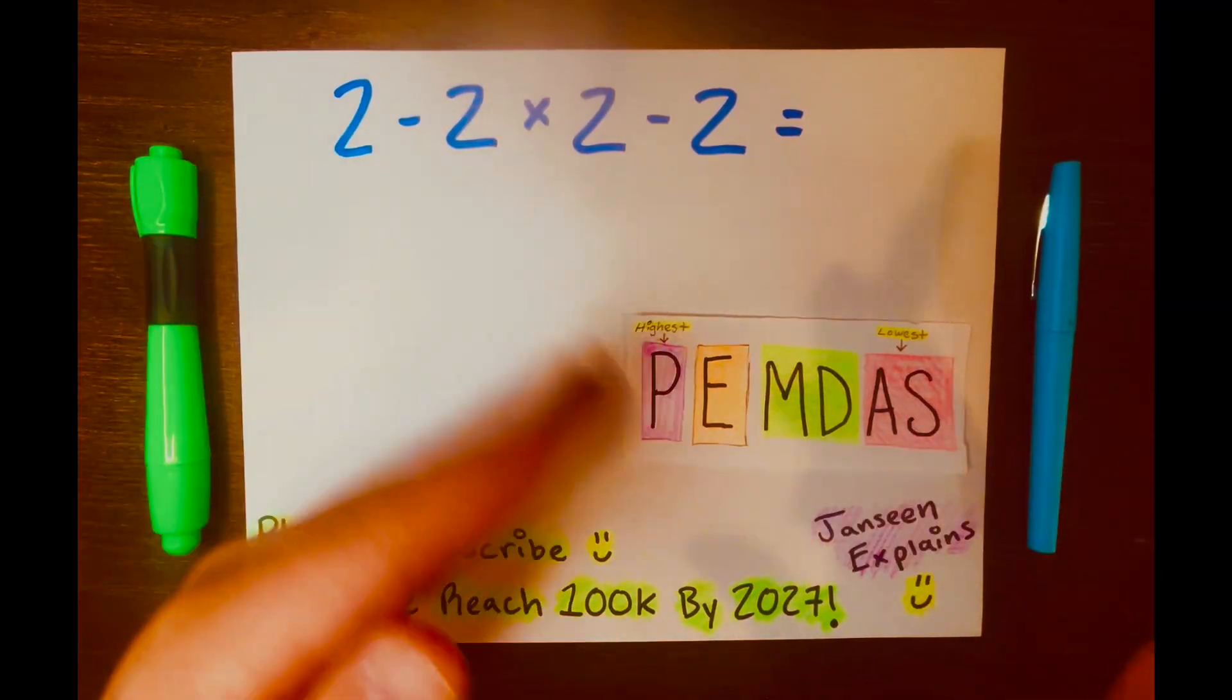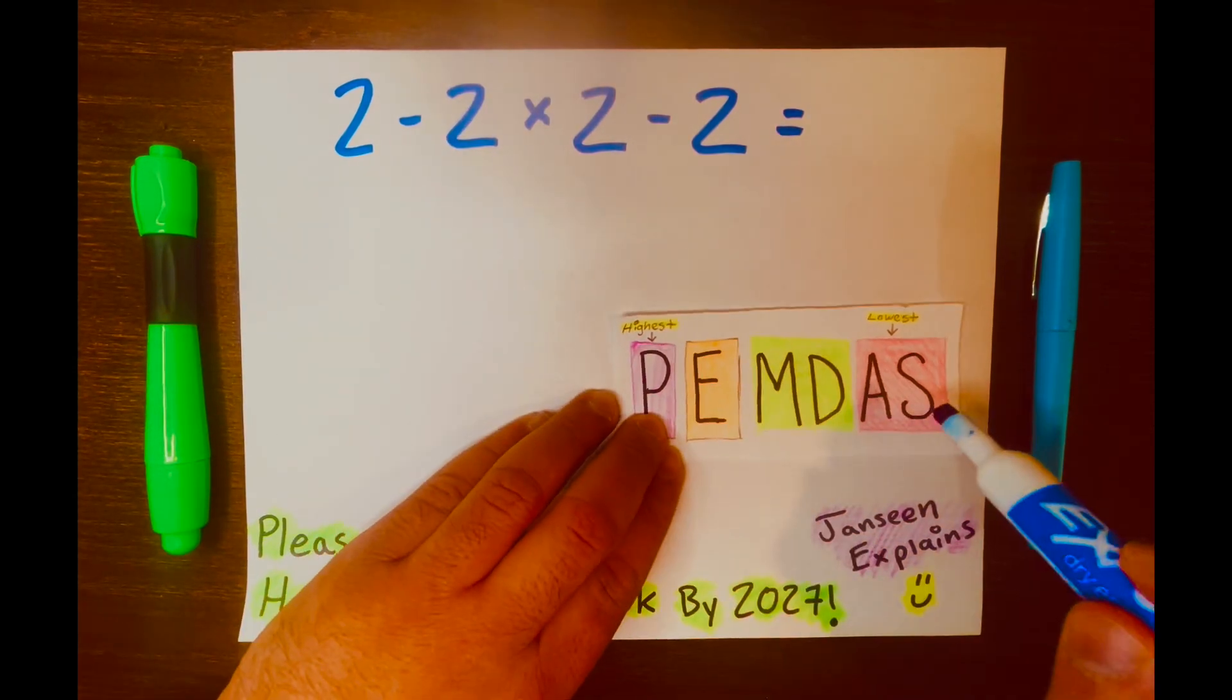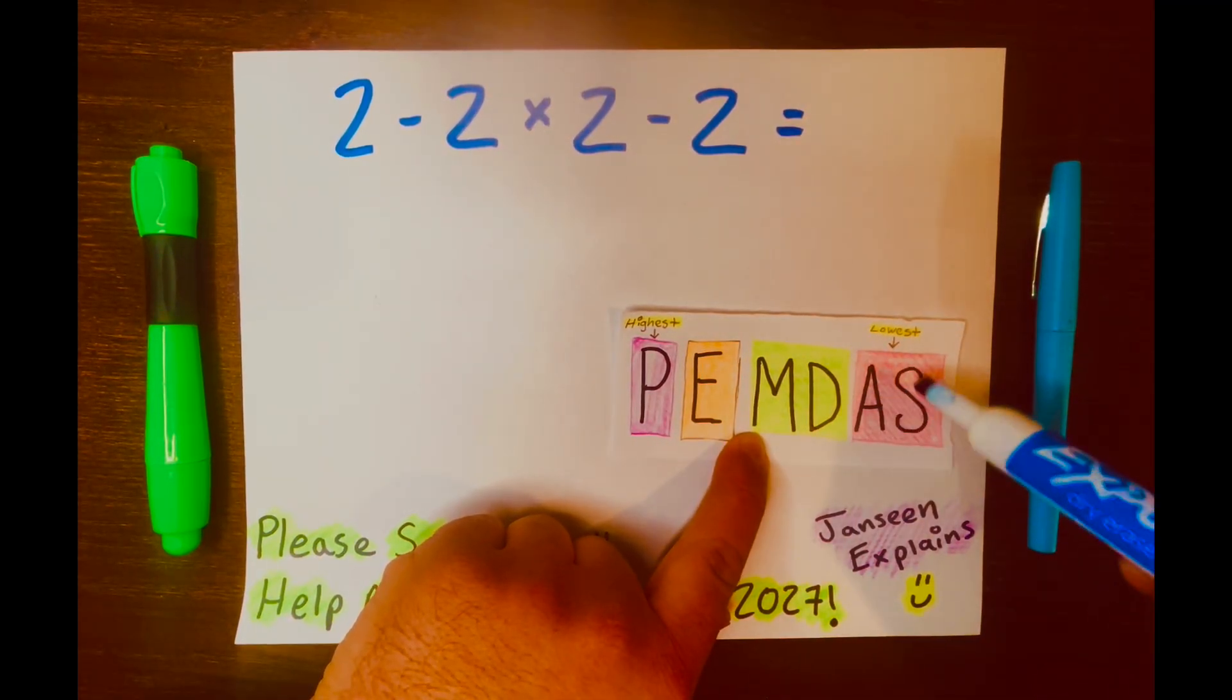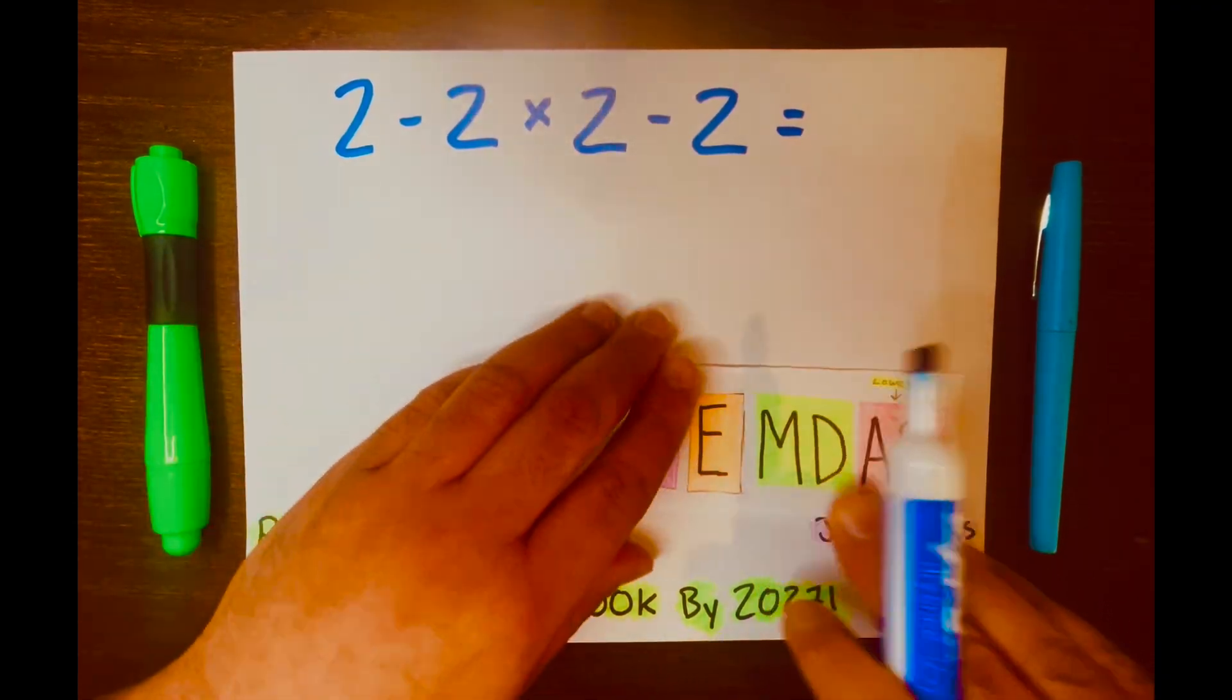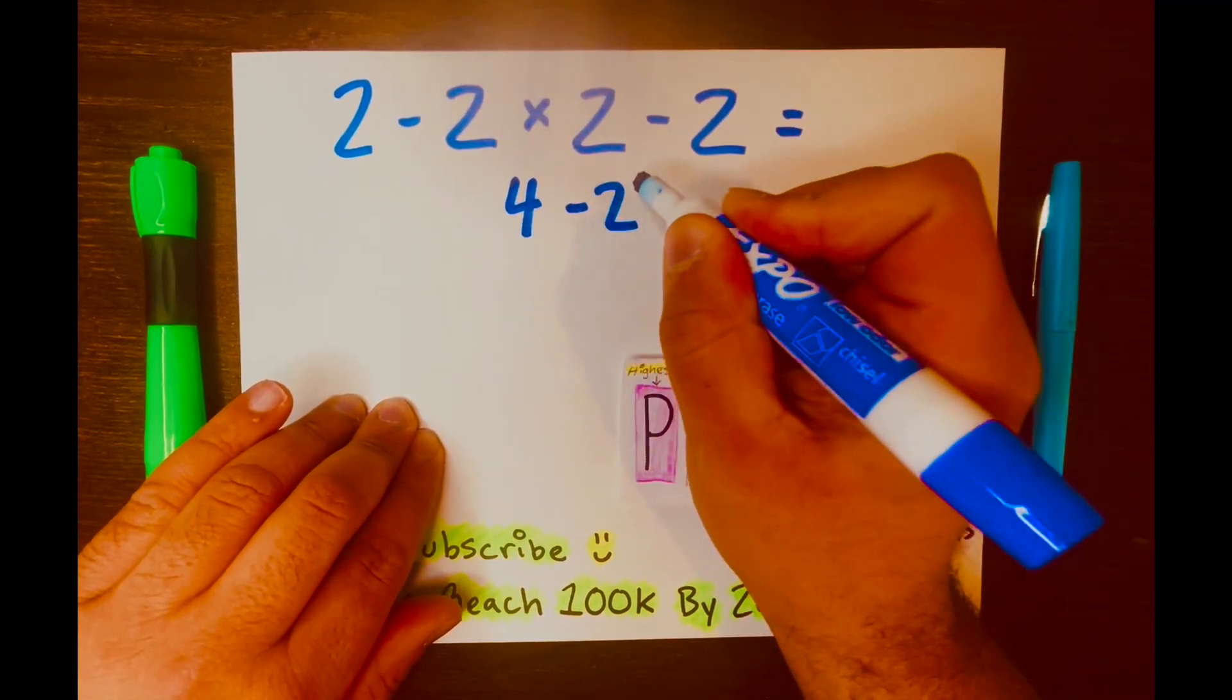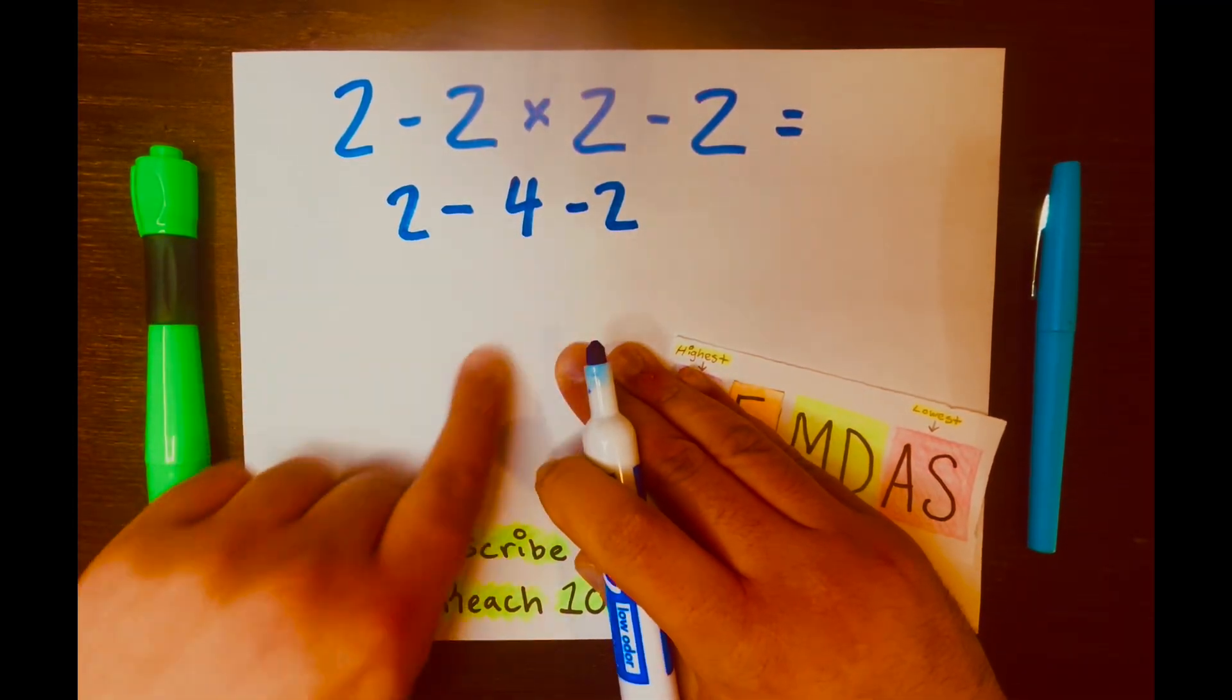And you solve the math problem from left to right according to the levels of PAMDAS. So 2 minus 2 will not go first because that is in the lower level. Multiplication will go first because it's above the AS level. So what is 2 times 2? 4. So I'll write 4 and then bring down the rest.